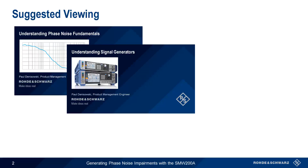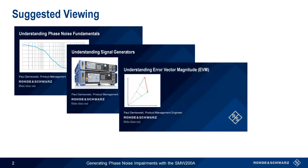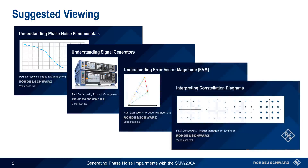We'll also be showing the effects of added phase noise on Error Vector Magnitude, or EVM, and on constellation diagrams. So the presentations Understanding Error Vector Magnitude and Interpreting Constellation Diagrams might also be helpful if you need an overview or a refresher on these topics.